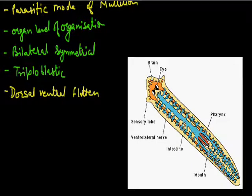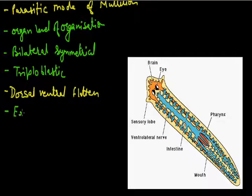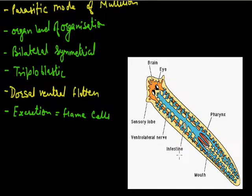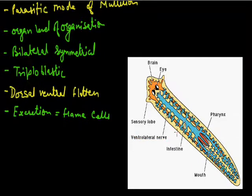These animals perform excretion through flame cells. Flame cells are the excretory structures in these animals. An example of a flatworm animal is Planaria.